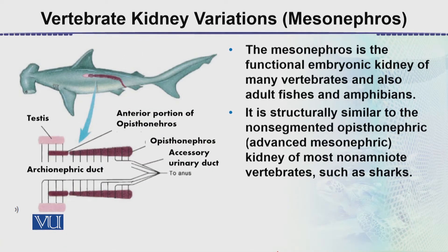The mesonephros is a functional embryonic kidney of many vertebrates and also adult fishes and amphibians۔ یہ عام طور پہ sharks یا advanced fishes میں it is structurally similar to the non-segmented opistonephros, جسے ہم advanced mesonephric kidney کہتے ہیں, of most non-amniotic vertebrates such as sharks۔ اس diagram میں دیکھیں تو testes اور arcuonephric duct ہے درمیان میں۔